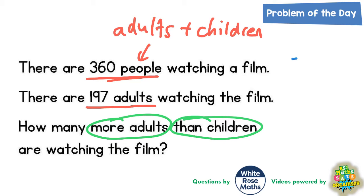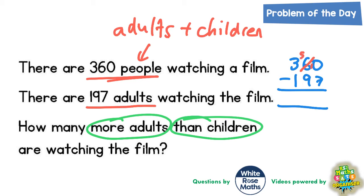So if we subtract 197 from 360, we will get the number of children. 0 take away 7 we can't do, so borrow — cross out the 6, it becomes a 5, and the borrowed 1 makes the 0 into 10. 10 take away 7 is 3. 5 take away 9 we can't do — borrow, it becomes a 2, and the borrowed 1 makes 5 into 15. 15 take away 9 is 6. 2 take away 1 is 1. So there are 163 children.